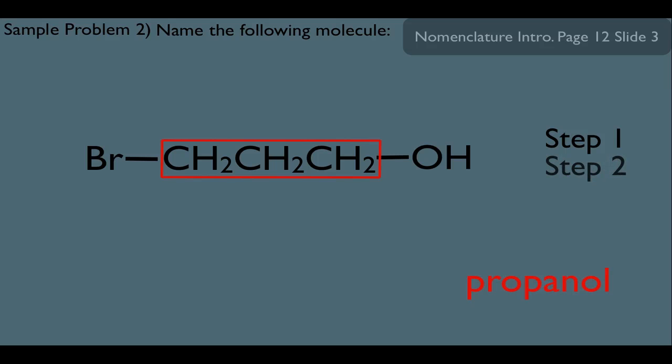Now let's look at step two here. What's the correct way to number this? Technically, if you number from left to right, you have a substituent on carbon-1, the Br, and a substituent on carbon-3, the OH.